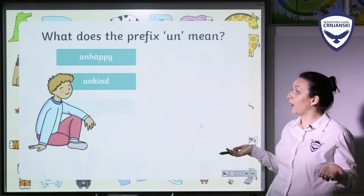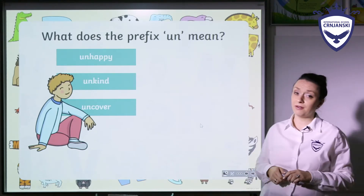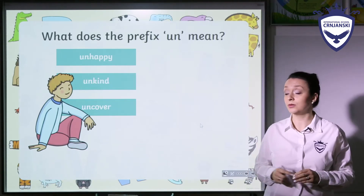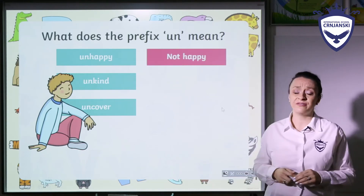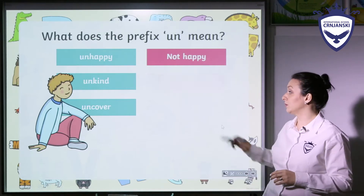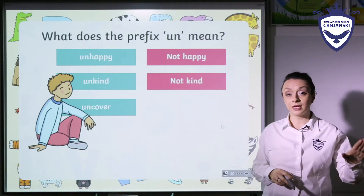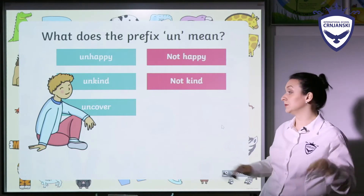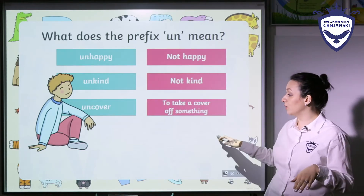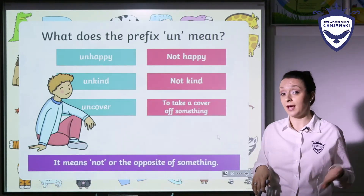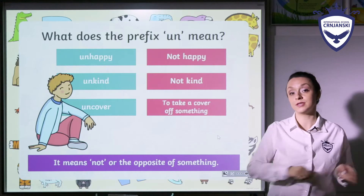So what does the prefix un mean? If I say I'm very unhappy with this situation right now, it means I'm not happy. If I say he's very unkind to the older, we are going to say that he is not kind. Or please uncover that shield — to take a cover off something. So when we use the prefix un, it actually means not, or the opposite of something.